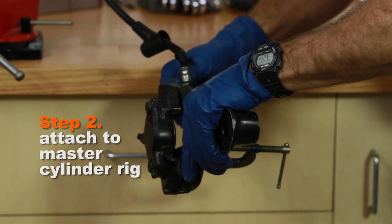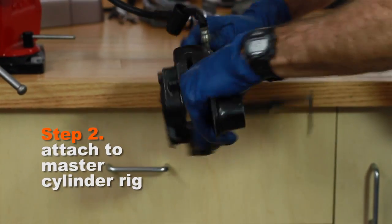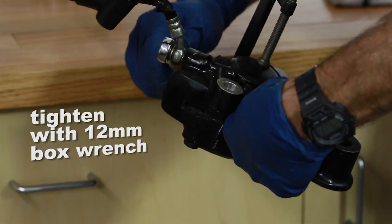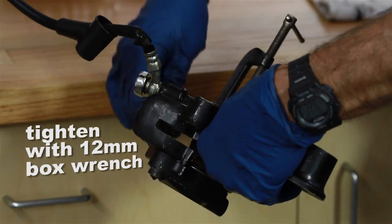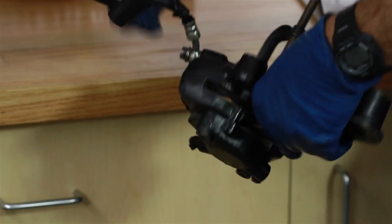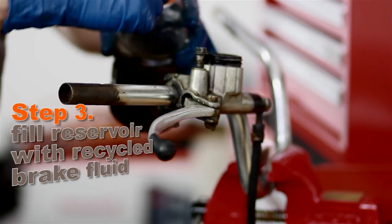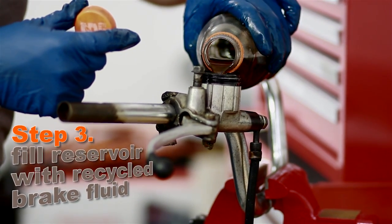So that's in place. Now I can connect this to my little master cylinder jig here. Then I take the 12 millimeter box wrench. You want to make sure they're tight because you don't want fluid leaking out. So I can let that hang down. As usual, I'm just going to use old brake fluid because it works fine.